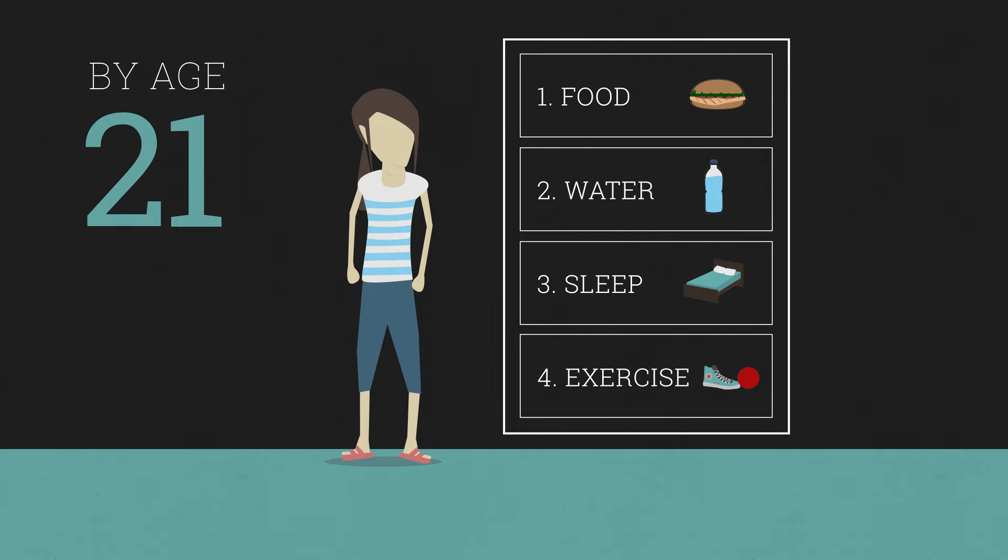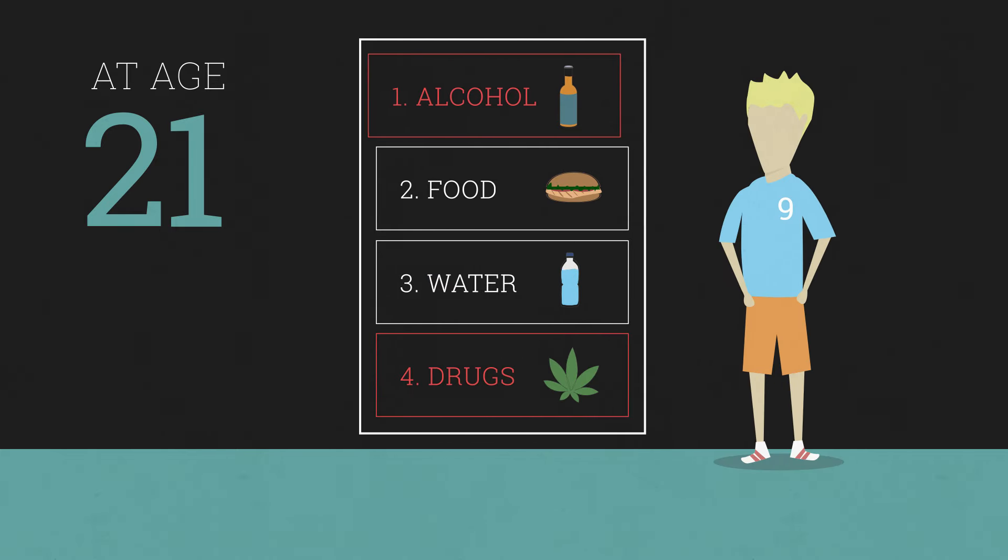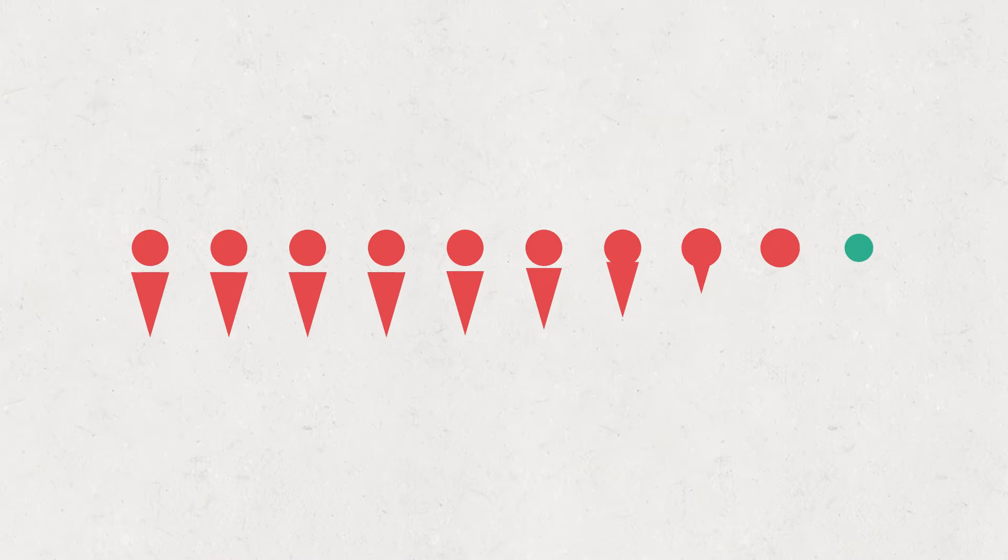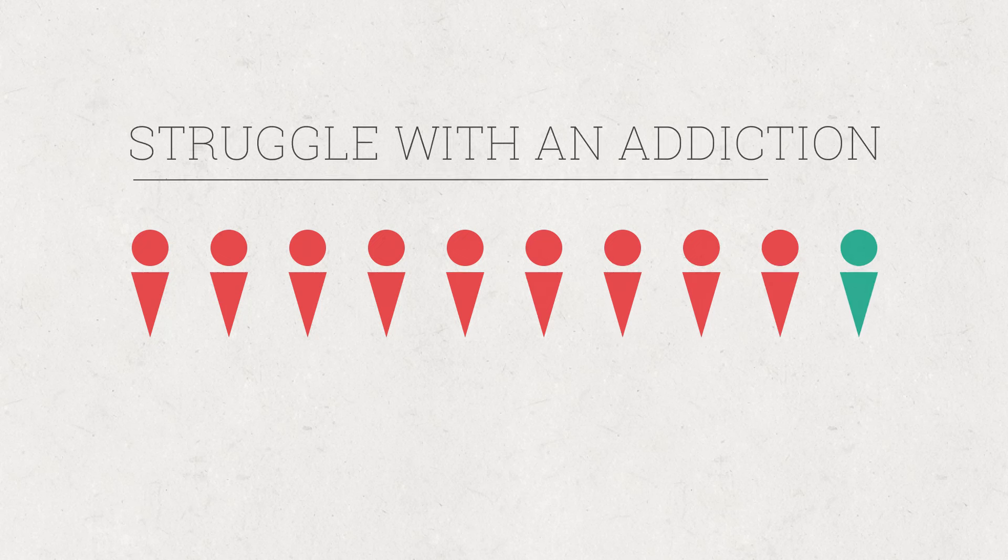The flip side is that once you are 21, it becomes very difficult to remove these harmful substances from your survival hierarchy. Studies show that 9 out of 10 people who currently struggle with addiction started drinking, smoking, or using before the age of 21.